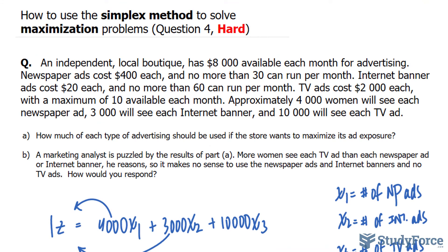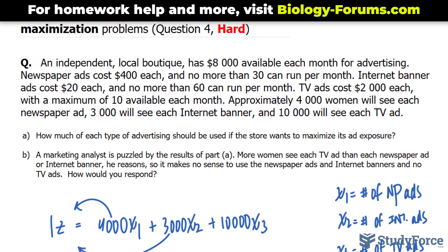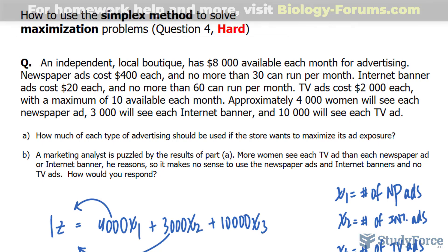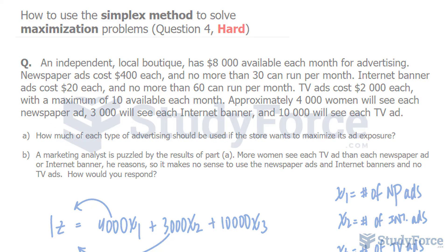Part B asks: a marketing analyst is puzzled — more women see each TV ad than each newspaper or internet ad, so he reasons it makes no sense to use newspaper and internet ads but no TV ads. How would you respond? If you've made it this far, please comment below with what you think is an appropriate response. That is how to use the simplex method to solve maximization problems. Watch question 5 for another example.